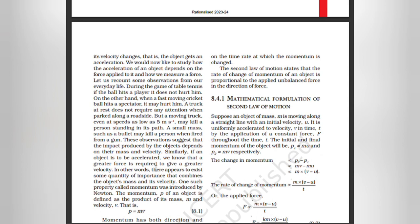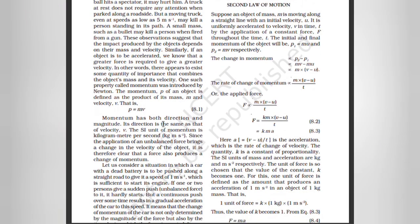These observations suggest that the impact produced by objects depends upon their mass and velocity. If an object is to be accelerated, a greater force is required to give it a greater velocity. There appears to exist some quantity of importance that combines the object's mass and velocity. One such property, called momentum, was introduced by Newton. Momentum p of an object is defined as the product of its mass and velocity: p = mv. Momentum has both direction and magnitude; its direction is the same as that of velocity v. The SI unit of momentum is kilogram meter per second.